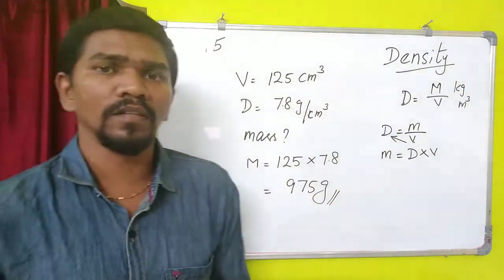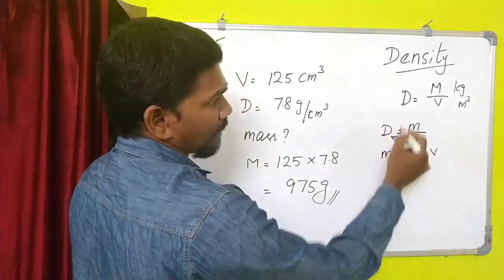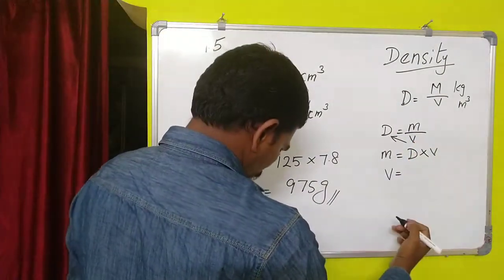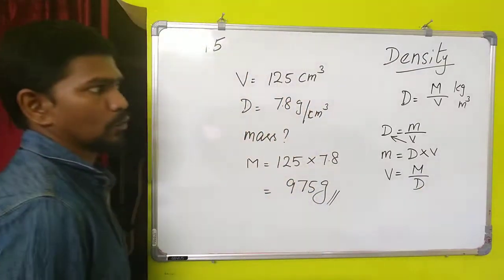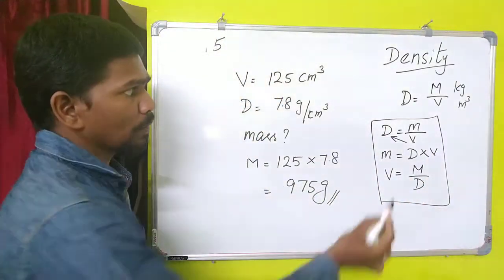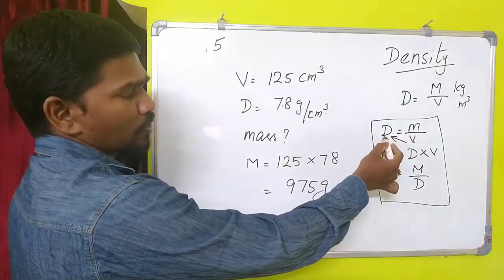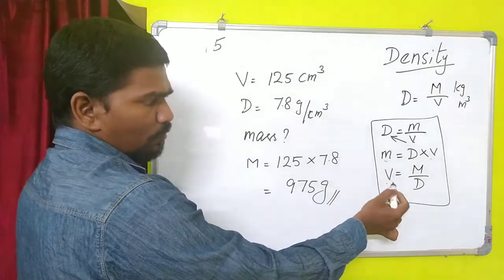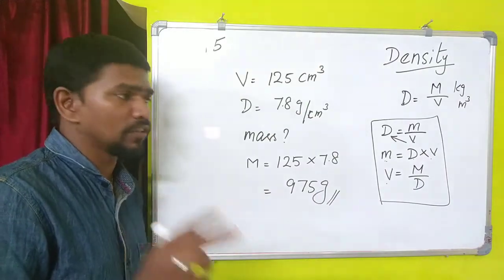When they give any two of these three — mass, density, and volume — you can find out the third. If volume is asked, you divide mass by density. These three things and their relationship — density = mass/volume, mass = density × volume, volume = mass/density — you should understand well.